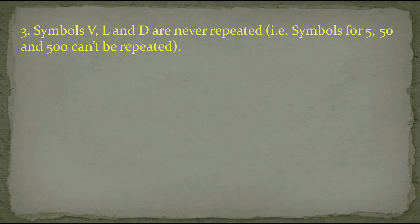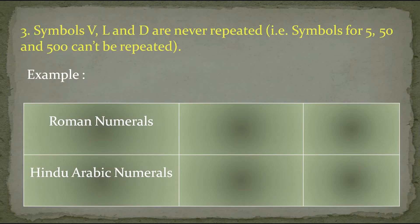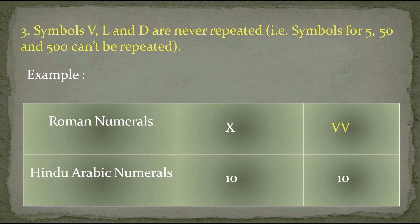Let's understand this by example. While writing 10, we have to write X because X equals 10. But if we recall rule one, writing V twice would give 5 plus 5 which equals 10. However, because of this rule, VV is wrong and X is the correct form.